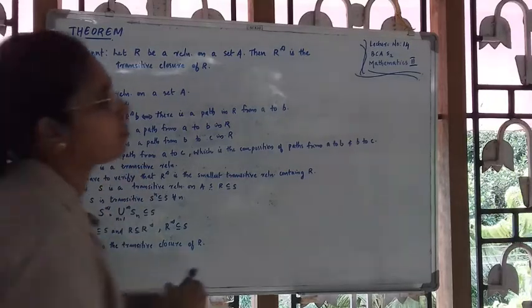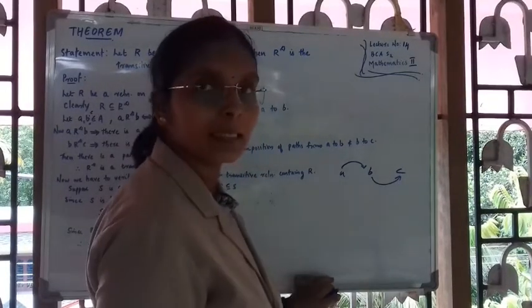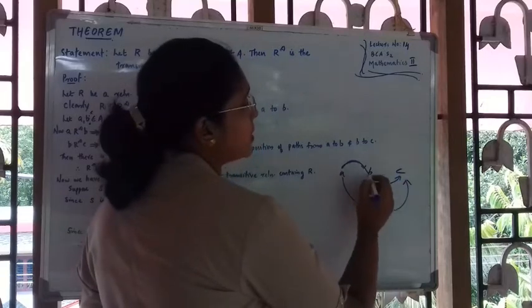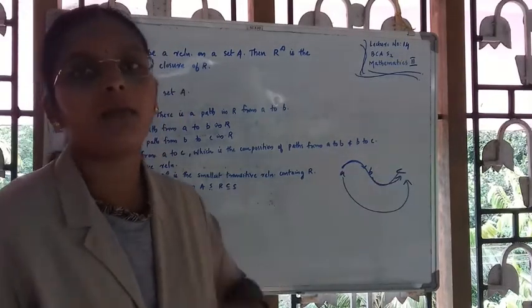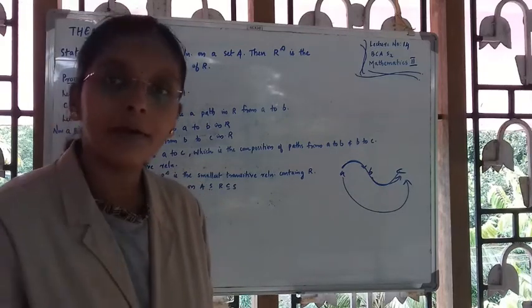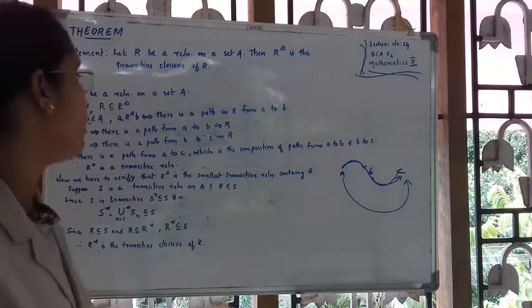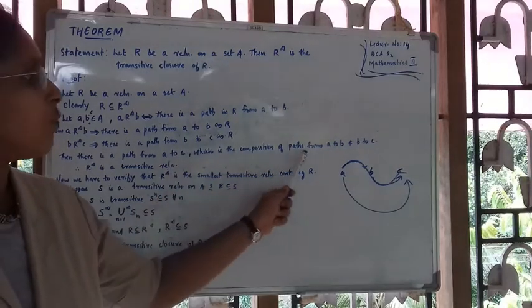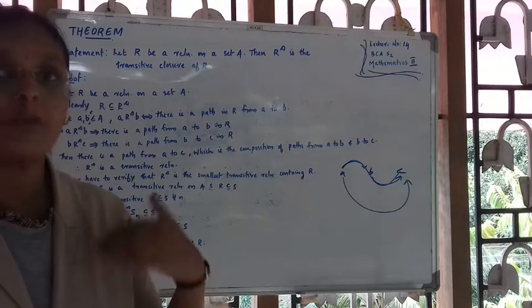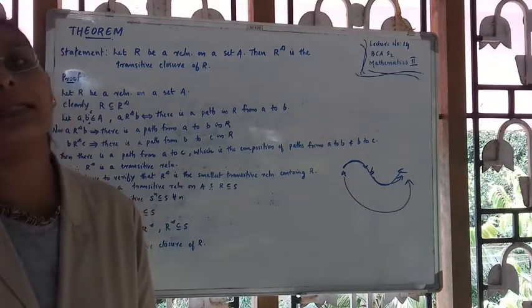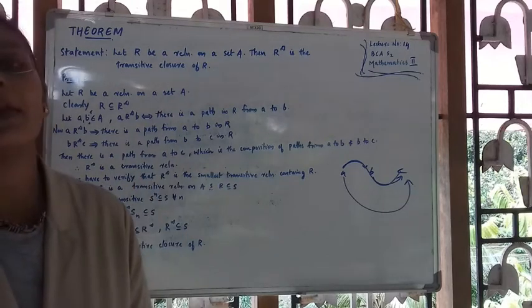If A is related to B by R-Infinity, and B is related to C by R-Infinity, then we can say that A is related to C by R-Infinity. So if A and B are related, and B and C are related, then A and C are related. There is a path from A to C, which is the composition of paths from A to B and B to C. Hence, R-Infinity is a transitive relation — it satisfies the transitive property.